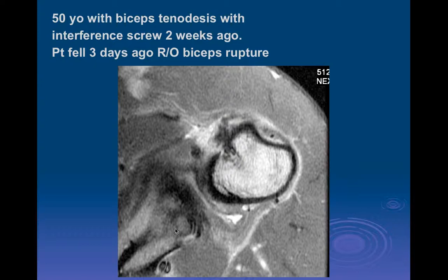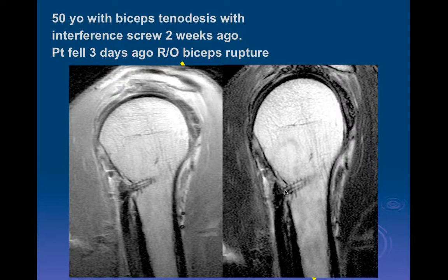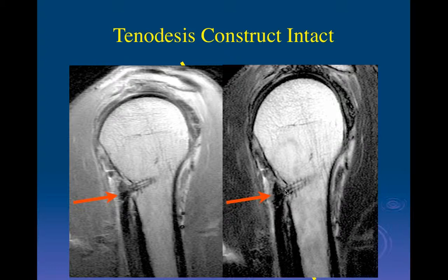Here's a 50-year-old with biceps tenodesis interference screw placed two weeks ago. The patient fell and they were looking for a biceps injury. We can see the biceps tendon coming in to the anchor — in the correct plane, there's the tendon coming up to the anchor, nice and intact. The biceps anchor was not damaged. This isn't really a functional perch for the muscle — that's going to be in the short head.